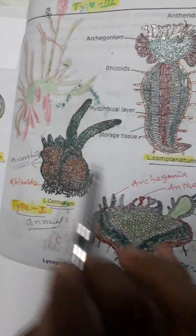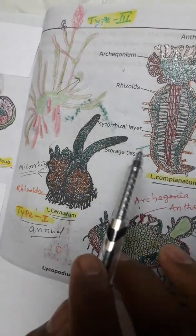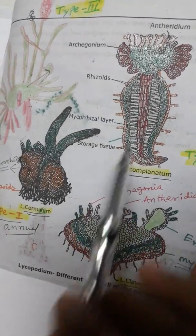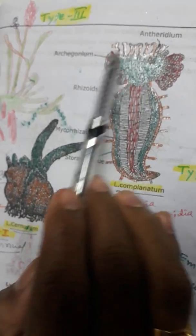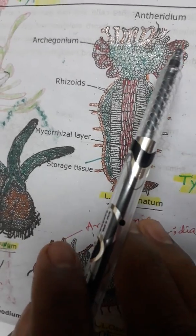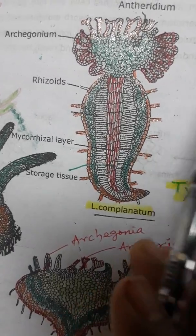These all are the prothalus, means juvenile gametophytes. Before formation of sexual organs, they are called prothalus. If they produce complete mature sexual organs, now it is called gametophyte. Generally we are saying either prothalus or gametophyte. Both are applied in condition.